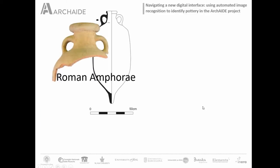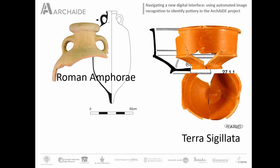To reach our goal, we decided to develop a proof of concept that used as test classes the Roman amphorae, Roman Terra Sigillata coming from Italy — Italian Terra Sigillata — Hispanic Terra Sigillata, and South Gaulish Terra Sigillata.